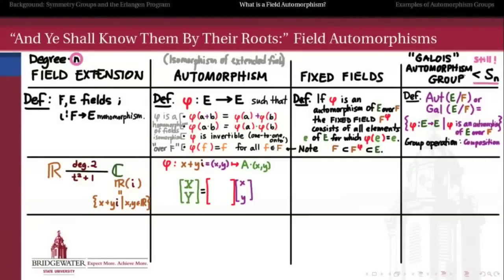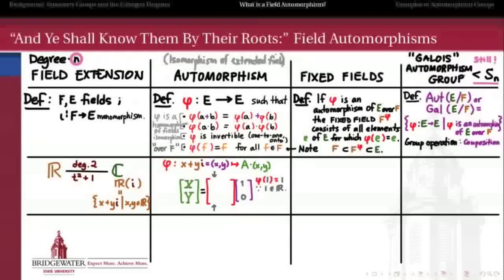Let's think about what the first column of this matrix ought to be. The first column is what you get when you multiply the matrix by the vector (1, 0), which in our basis of 1 and i represents 1 + 0i, i.e., just 1. When I take phi(1), I must get 1 because 1 belongs to the base field and phi has to be an automorphism over the base field — every real number, in particular 1, cannot be changed by phi. So phi(1) = 1, which is 1 + 0i in our basis, making the first column of this matrix (1, 0).